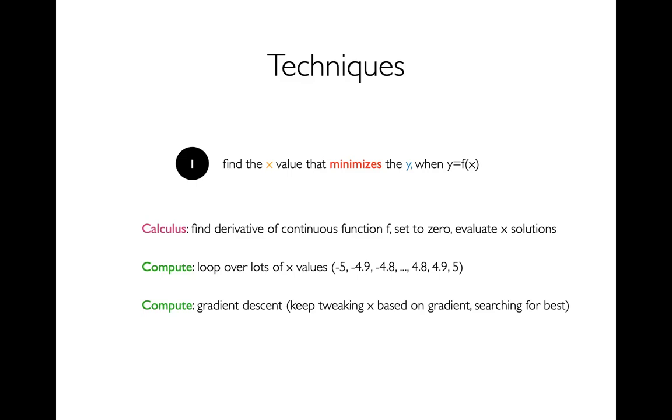If we're interested in doing this computationally, we could brute force it. And by brute force, I mean we just naively try lots of different values. Maybe I try negative 5, negative 4.9, negative 4.8. If the minimum is between negative 5 and 5, I'm probably going to get pretty close. It might not be perfect, but I can have a pretty good approximation.